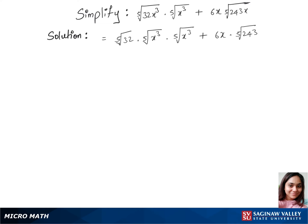In our next step, we have fifth root of 32, which can be written as 2⁵ times fifth root of—we'll combine this and write this as fifth root of x⁵ times x plus 6x times...